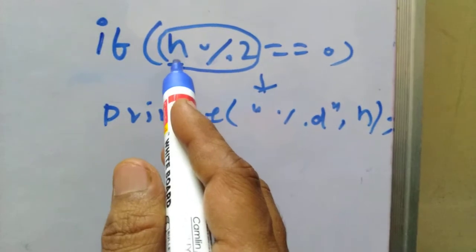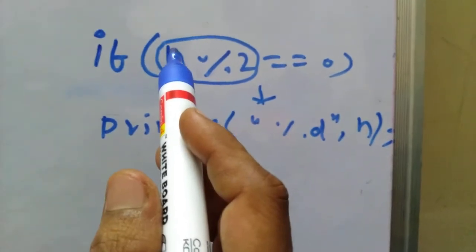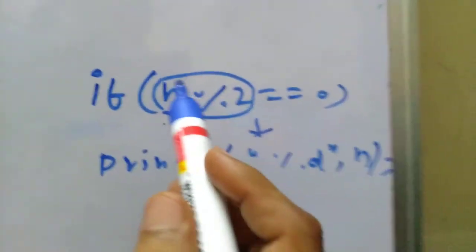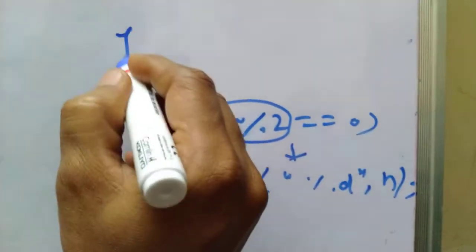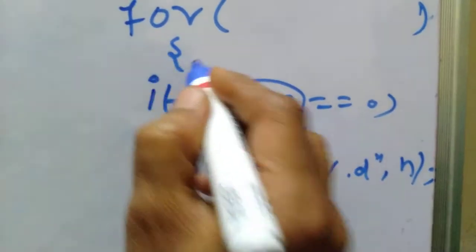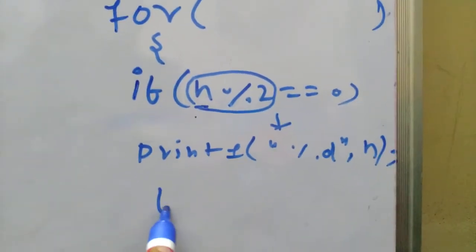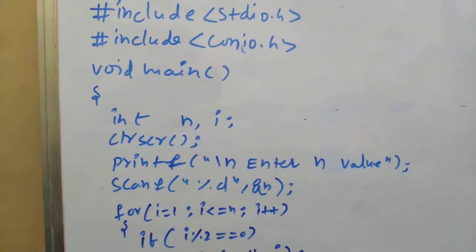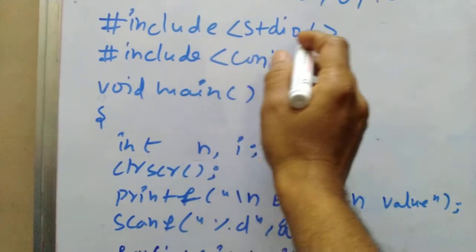This finds only one number, but we need to iterate over 10 numbers — we need iteration n times. For that we need to use a for loop. Inside the for loop we write these statements.